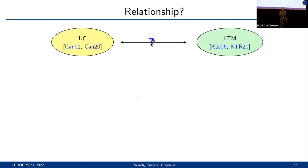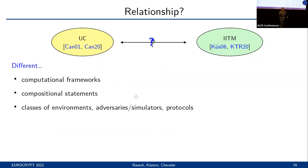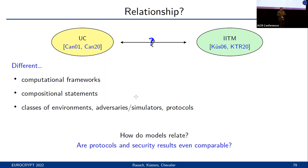So let me briefly summarize. As we have seen, the UC and IITM models are quite different, not only in their computational frameworks, but also in their compositional statements. They even use different classes of environments, adversaries, simulators, and protocols. So it's not at all easy to see how they relate, and given that they use different classes of environments and simulators, whether there's a general relationship in the first place.